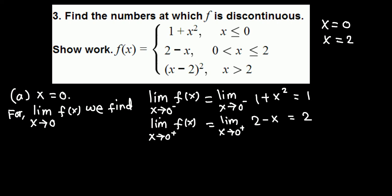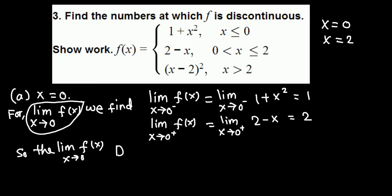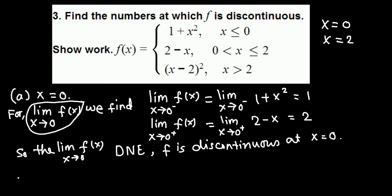The left-hand limit is 1 while the right-hand limit is 2 — they are not equal. That means the limit of f(x) as x approaches 0 does not exist, so the function is discontinuous at x equals 0.